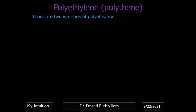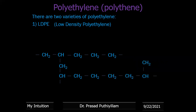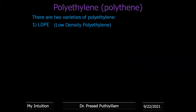There are two varieties of polyethylene: LDPE (low density polyethylene) and HDPE. For LDPE, the schematic representation shows a branched chain — CH2, then CH, then CH2 chains growing in the downward direction as well as the straight direction. Carbon's tetravalency must be satisfied. This is the simplest representation of low density polyethylene.